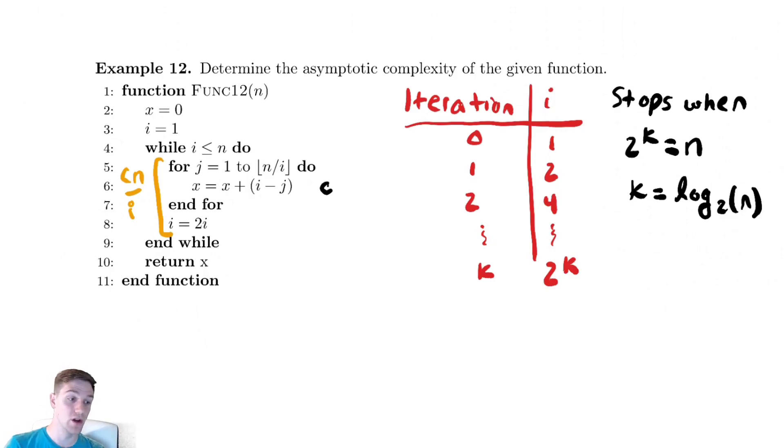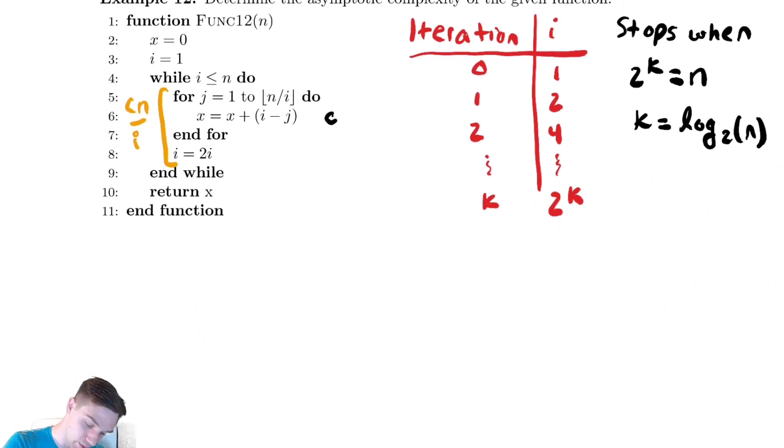As we've seen before, when analyzing while loops with other loops embedded inside of them, it can be helpful just to plug in the values that the loop variable for the while loop takes and see where that leads us. So T of n is equal to cn over i.